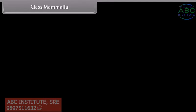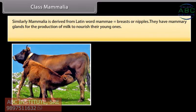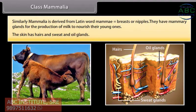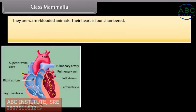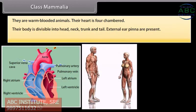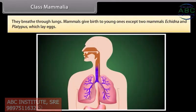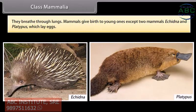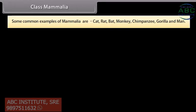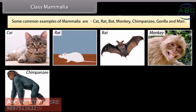Class Mammalia is derived from Latin word 'mamma' meaning breasts or nipples. They have mammary glands for the production of milk to nourish their young ones. Their skin has hairs and sweat and oil glands. They are warm-blooded animals. Their heart is four-chambered. Their body is divisible into head, neck, trunk and tail. External ears (pinnae) are present. They have four limbs. The diaphragm divides the body into two cavities internally. They breathe through lungs. Mammals give birth to young ones, except two mammals, Echidna and Platypus, which lay eggs. Common examples are cat, rat, bat, monkey, chimpanzee, gorilla and man.